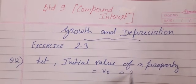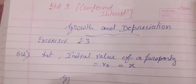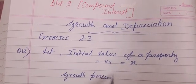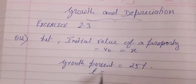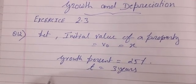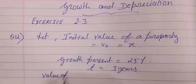Let initial value of the property, which in general we are denoting by v₀, be x. Growth percent is equals to 25%, time is three years, so value of that property after three years we will take it as v.